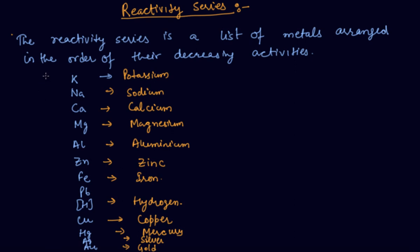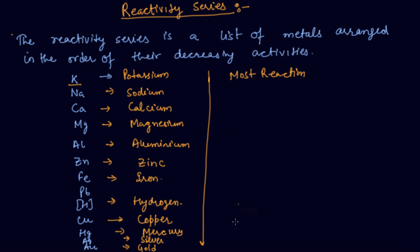They are arranged from top to bottom. The topmost metal is the most reactive — if you keep it in open atmosphere it will vaporize itself. Like sodium, we store it in kerosene oil because it will burst. Gold is the least reactive. This is the reactivity series showing how each metal reacts with the atmosphere, with air or oxygen. Potassium is the most reactive metal and gold is the least reactive metal.